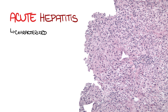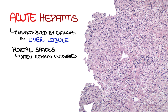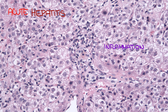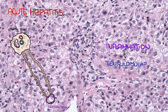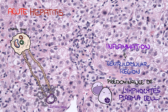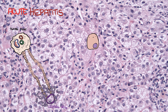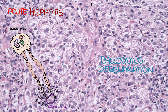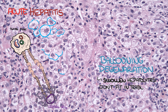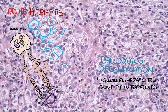Microscopically, acute hepatitis is characterized by changes in the liver lobule, while portal spaces often remain untouched. In the picture, there is inflammation localized predominantly in the centrilobular region, with predominance of lymphocytes and plasma cells. Hepatocytes are altered and regressed. They start to swell and undergo ballooning degeneration. Swollen hepatocytes don't fit in trabecules, and the physiological trabecular pattern of liver parenchyma is disrupted. The architecture of the liver lobule becomes less arranged — a phenomenon called lobular disarray.